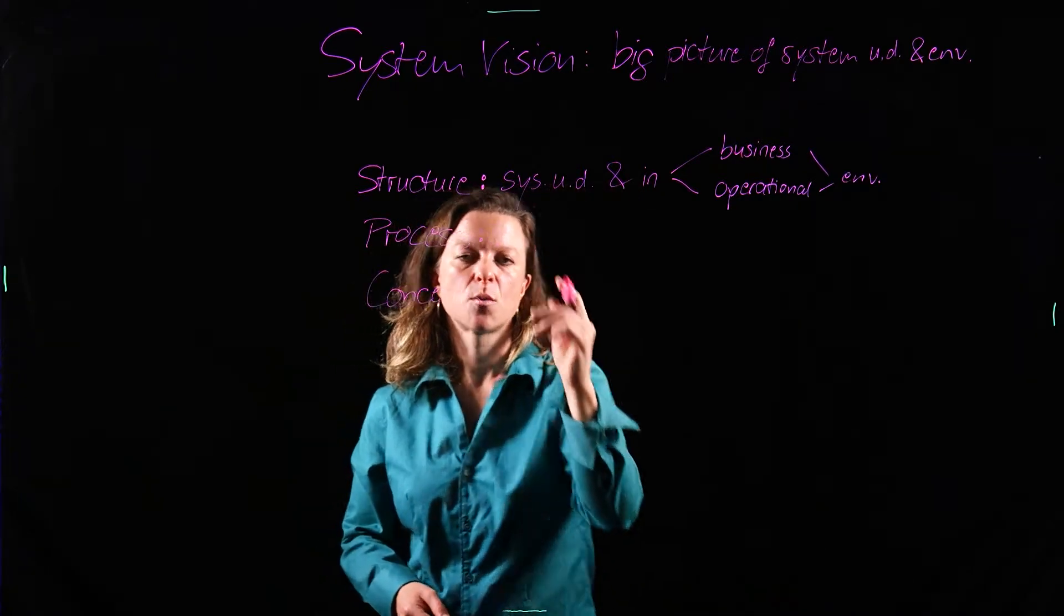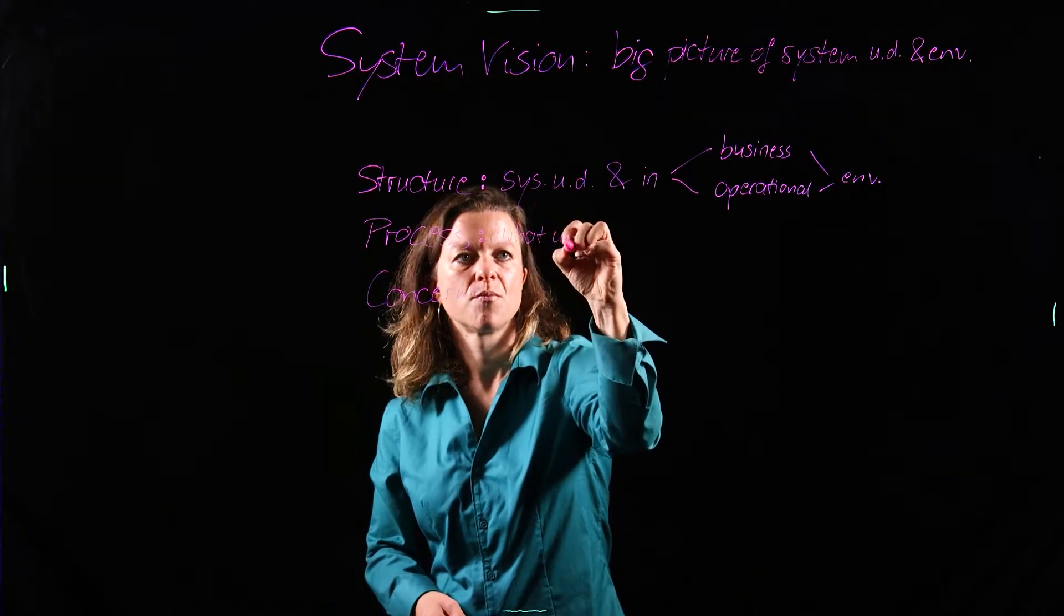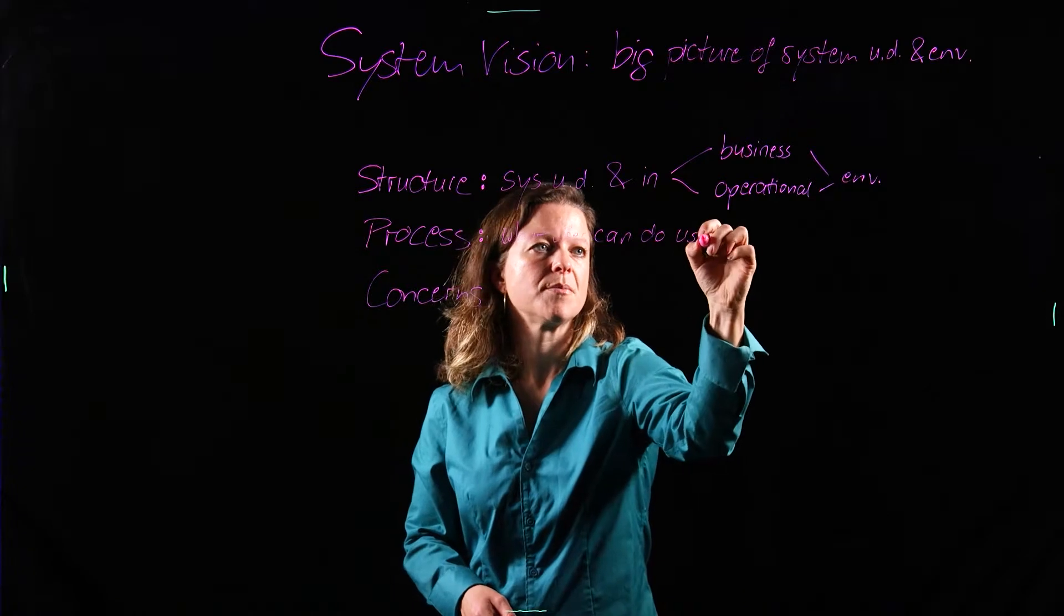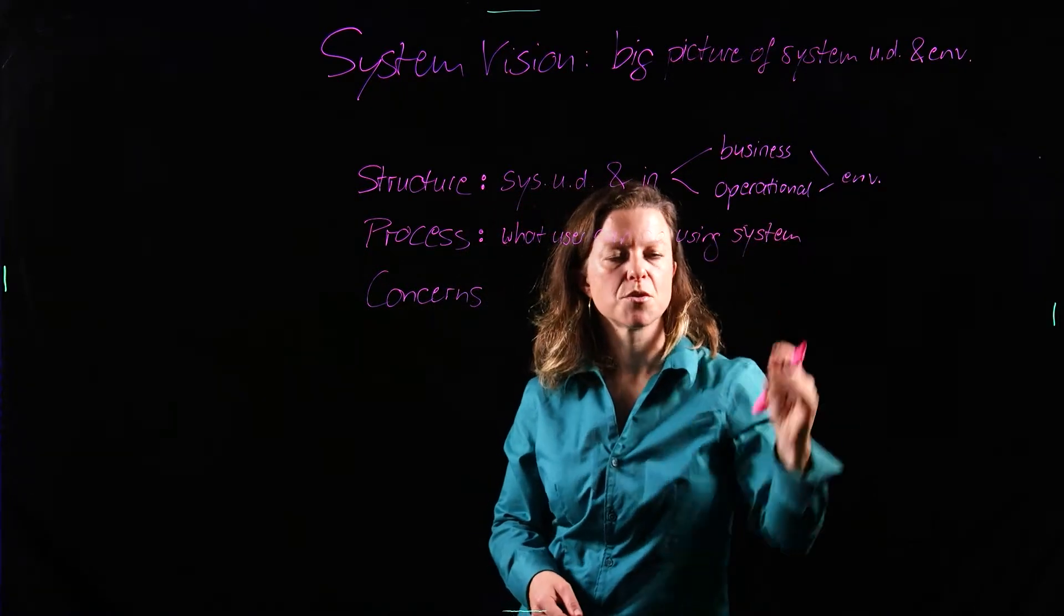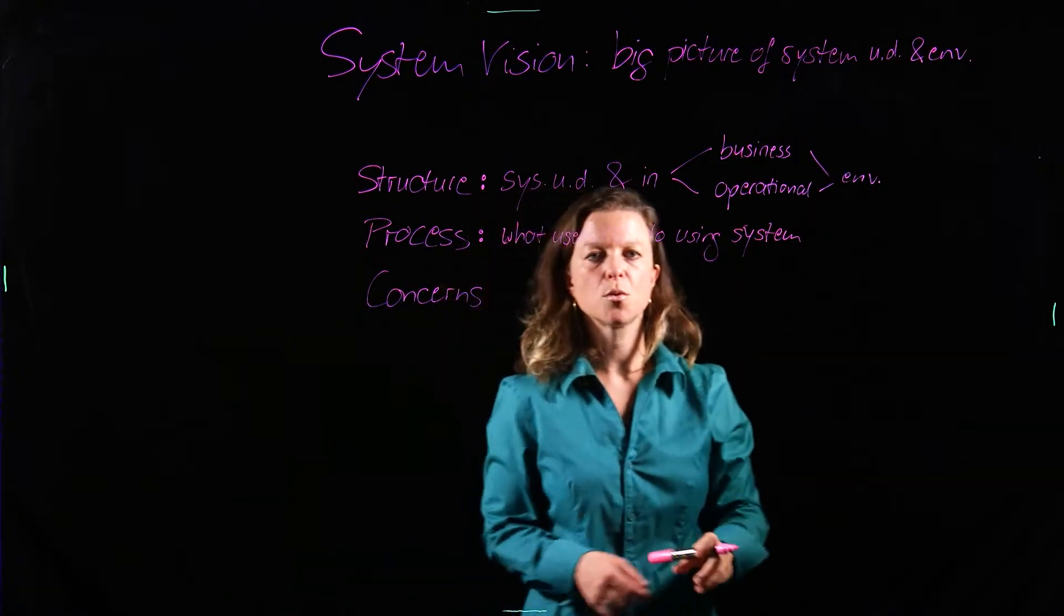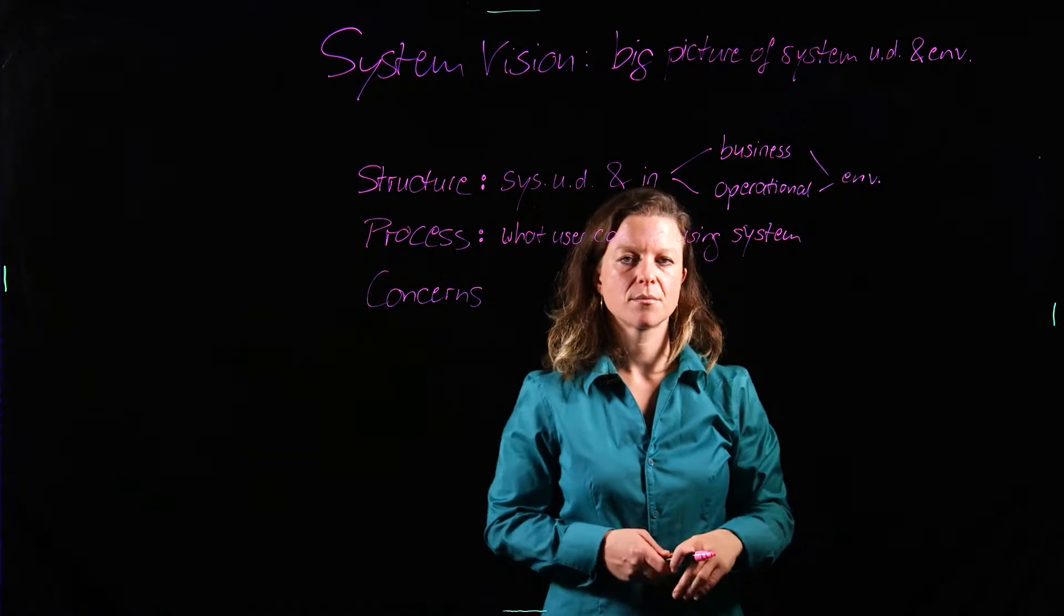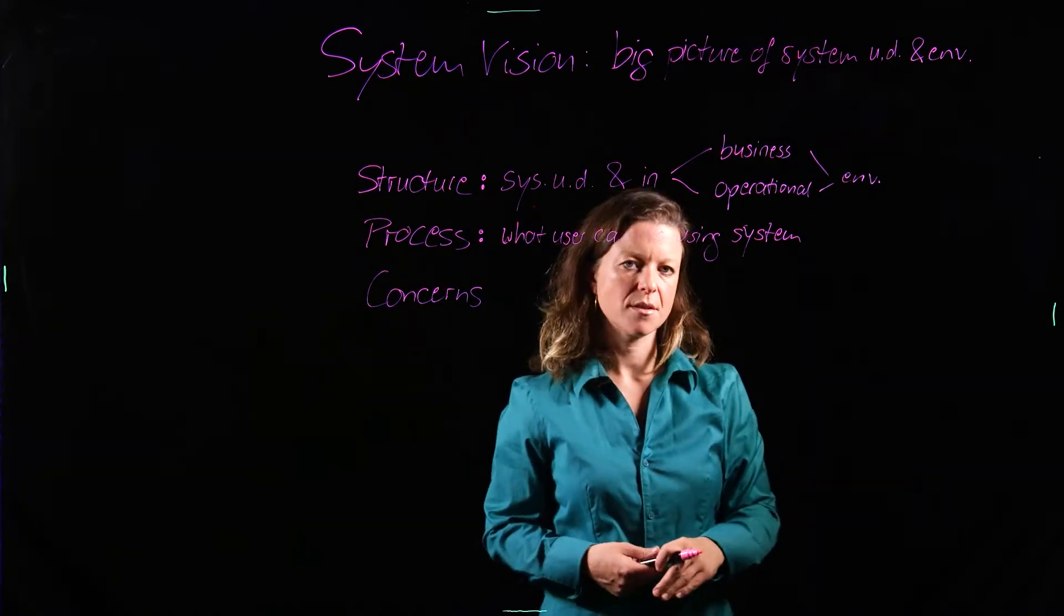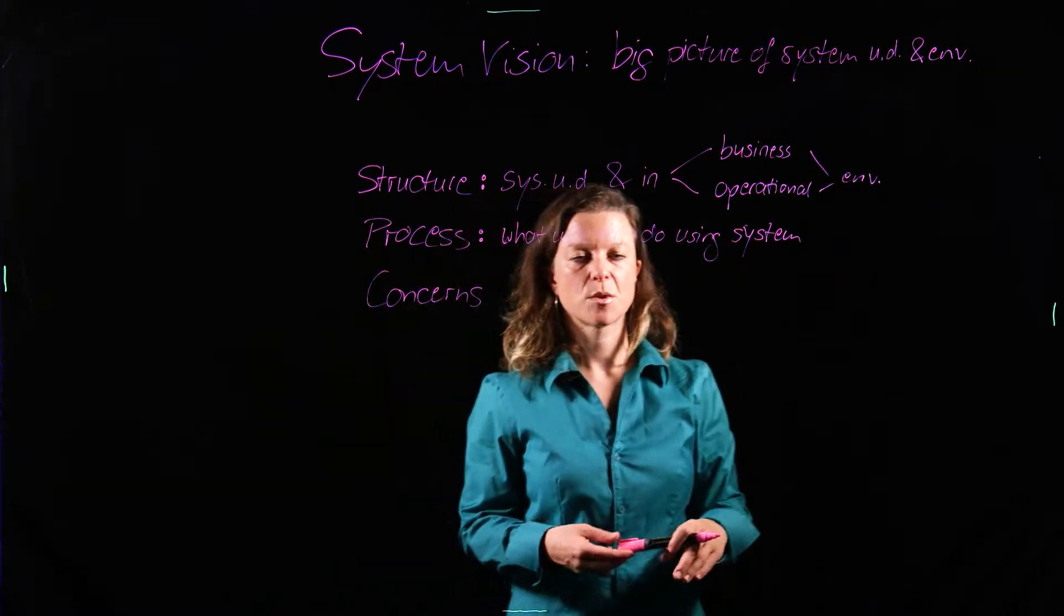And so both of those contexts are going to be represented in your system vision picture and then you will also represent the processes, what the user can do using the system. So you want to depict that they are able to agree on a carpool, meet up at a certain time, go places, come back, get billed for it, sign up for a different modality, sign up for a different type of payment, whatever they want to do in there.